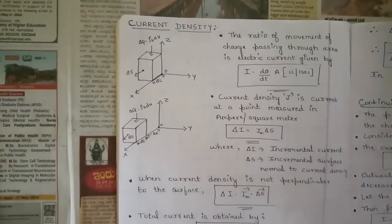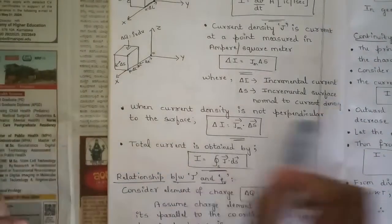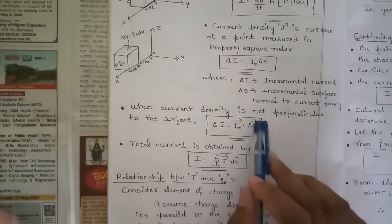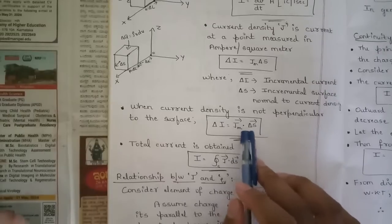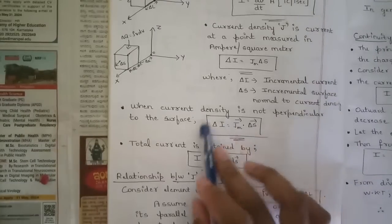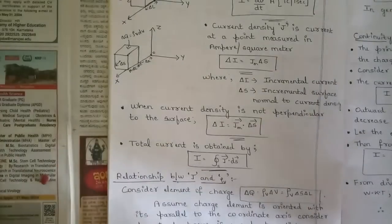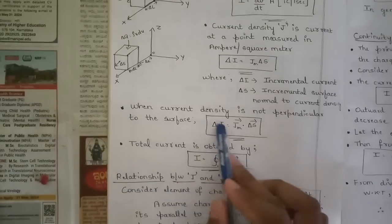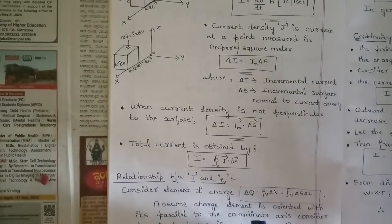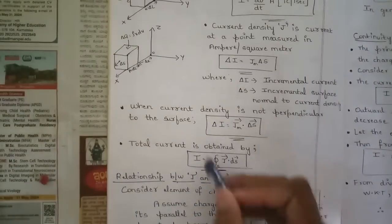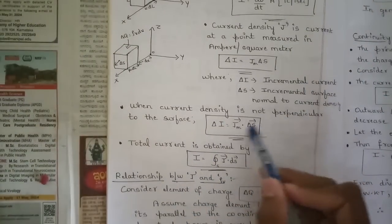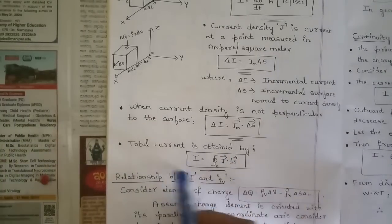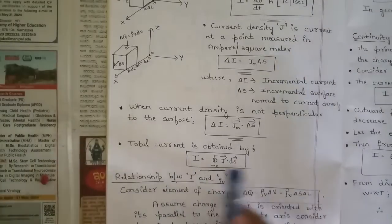When current density is not perpendicular to the surface, we can say that Delta I = J_n vector · Delta S vector — the dot product of current density J and the incremental surface produces the change in current. Therefore the total current is obtained by I = surface integral of J · dS. This is a very important formula used in further modules as well.